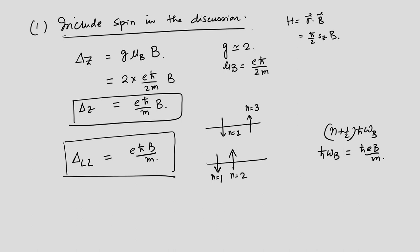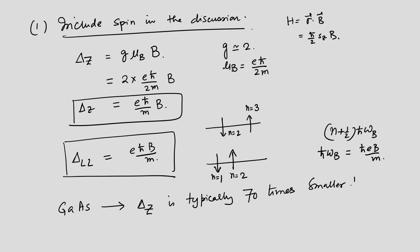In practice, for example in GaAs, the Zeeman energy Δ_Z is typically 70 times smaller than the Landau level spacing. So including spin is a worthwhile exercise, but it doesn't give anything significantly different: the nth Landau level of one spin just coincides with the (n+1)th level of the other spin.